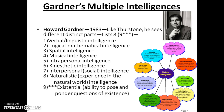Gardner also identified intrapersonal intelligence — knowing and understanding yourself. Kinesthetic, so athletics are included too. Interpersonal, which is dealing with other people. And naturalistic, your experience and understanding of the natural world, which extends to protecting the environment. Finally, existential — the ability to pose and ponder questions of existence. That one especially is something we hadn't really heard before.